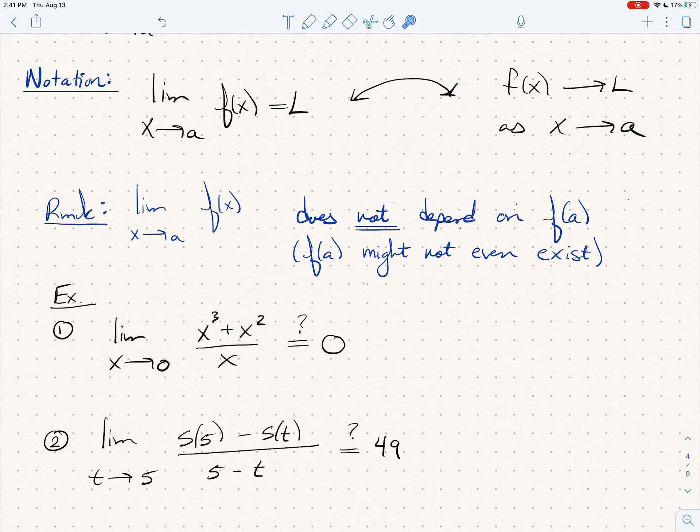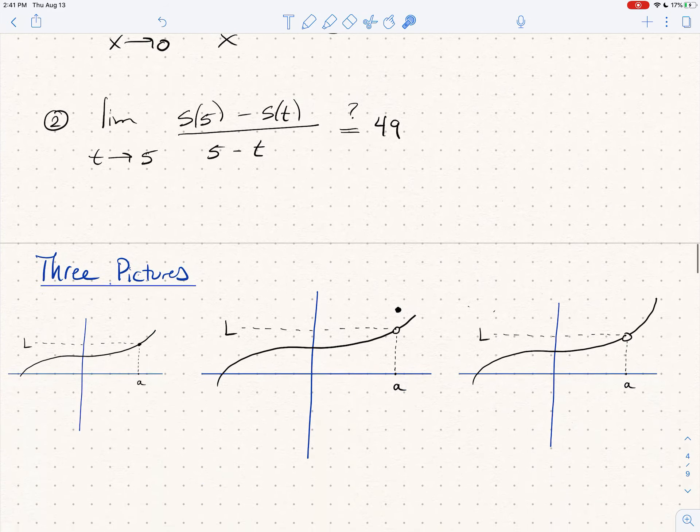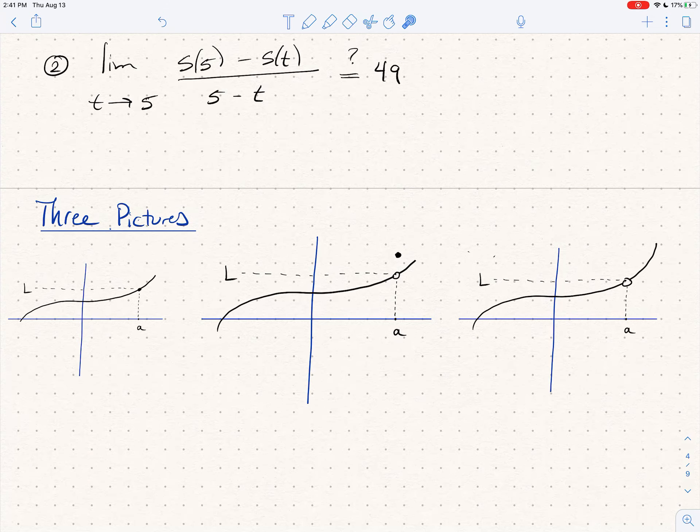All right, so I want to give you three pictures and discuss them with you that sort of illustrate some of the things that can happen here. In the first picture on the left, we'll go left to right. I've got a function, this is my function f. Notice that f is defined at a, and in fact in this case f(a) is equal to L. And you can see as x goes to a, the function is getting closer and closer and closer to this line, to L.